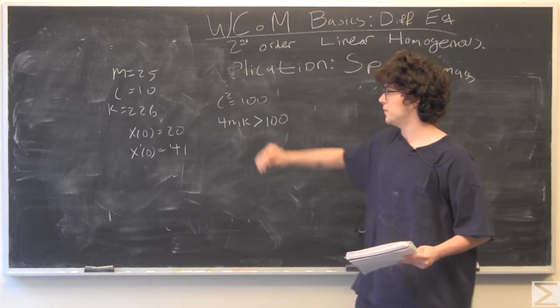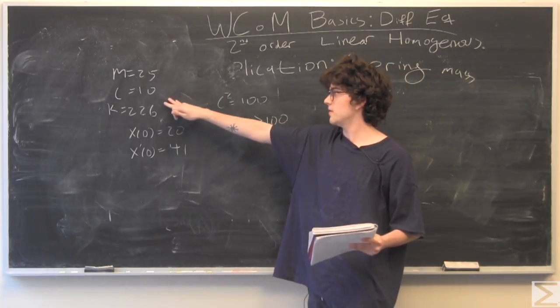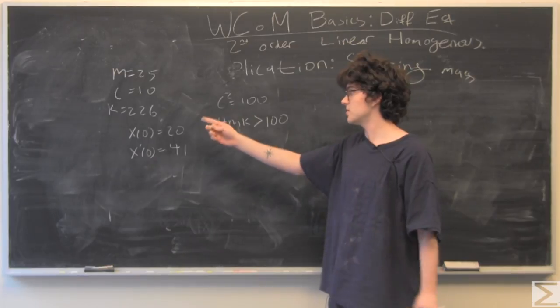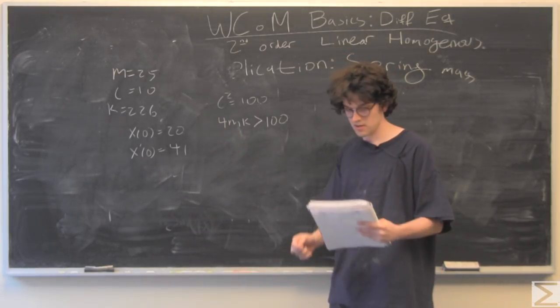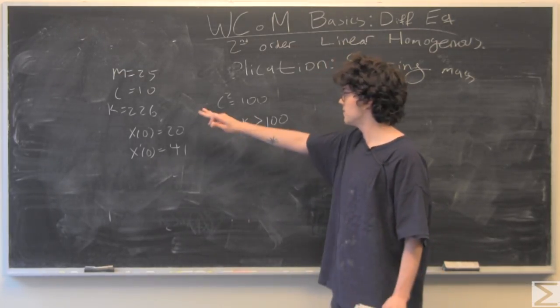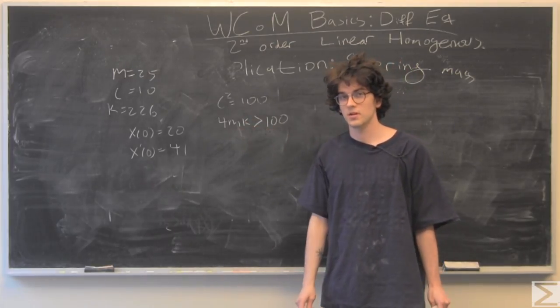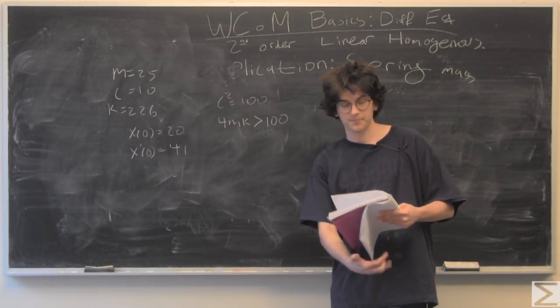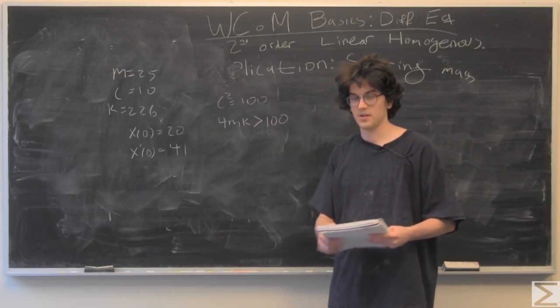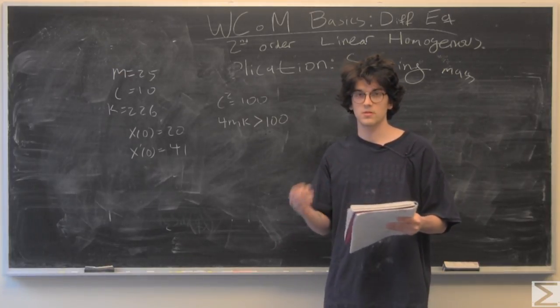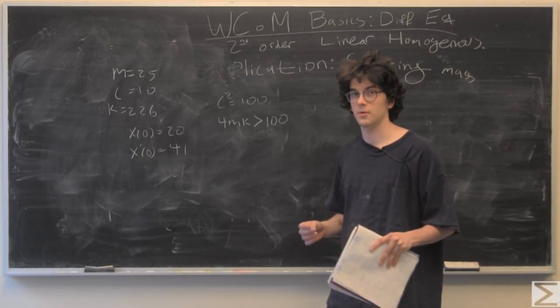So if we have a mass of 25, a damping coefficient of 10, and a spring constant of 226, then obviously 4 times mk is greater than 100, which is equal to c squared. And so we have an underdamped case, which will give us two distinct and imaginary roots.